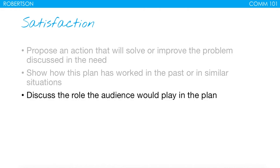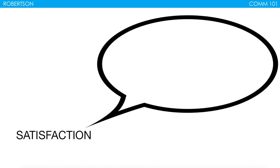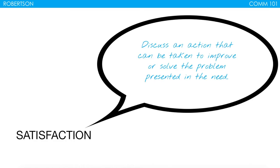Show how this plan has worked in past or similar situations — again, this is an opportunity for research. You're showing how it works, supported through research, really trying to convince your audience that this will truly solve for that need. It might be analogous or a smaller representative sample. You're also going to discuss the role the audience would play in the plan, trying to get the audience to start thinking about themselves as part of that solution.